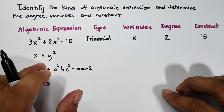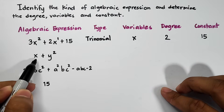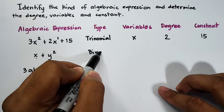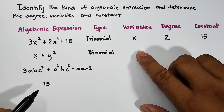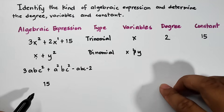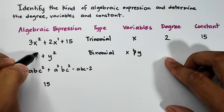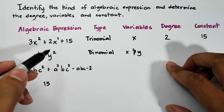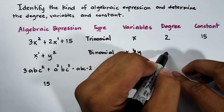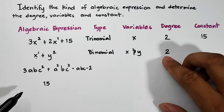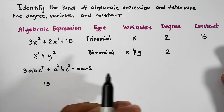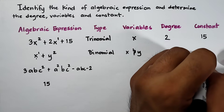Next, we have x plus y squared. Counting the terms — 1 and 2 — the type is a binomial. The variables are x and y. For the degree: x has an exponent of 1 and y has an exponent of 2. The greater is 2, so the degree is 2. Since there is no standalone number, the constant is 0.